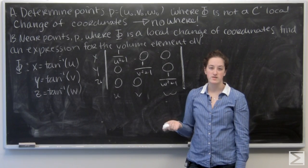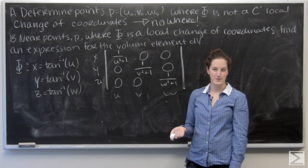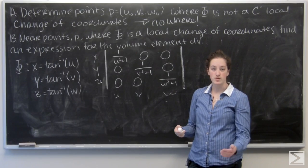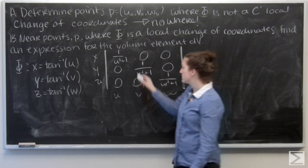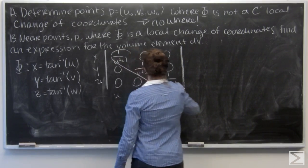Now this matrix is already in lower and upper triangular form. So to take the determinant, we just need to multiply the entries on the main diagonal, which is here.